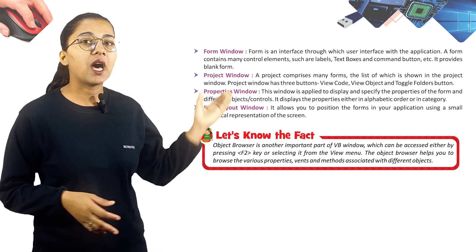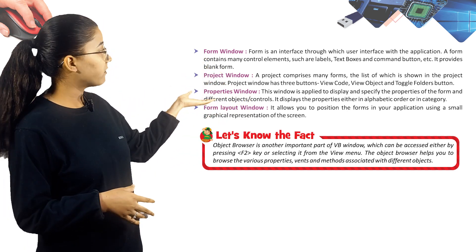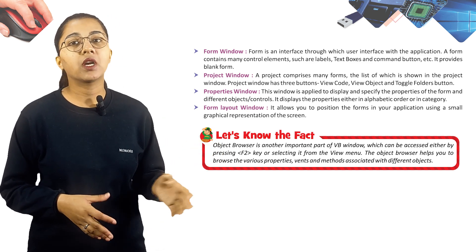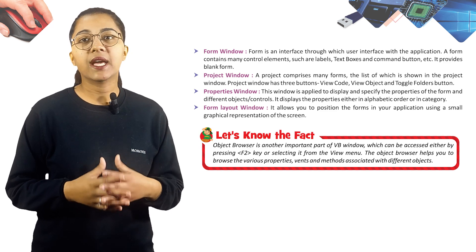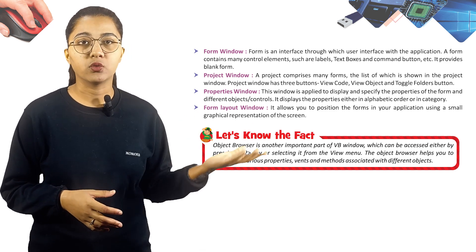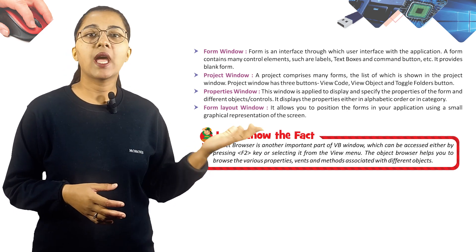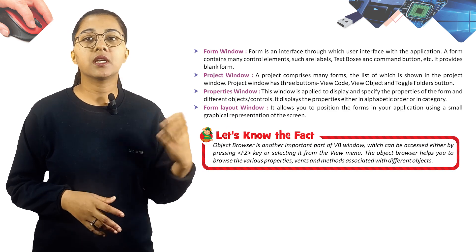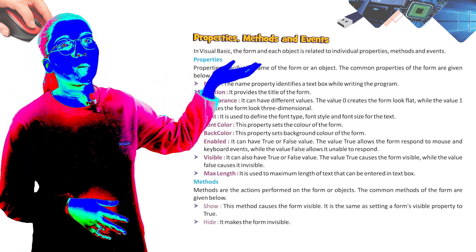Interesting fact: The Object Browser is another important part of the VB window, which can be accessed either by pressing the F2 key or by selecting it from the View menu. The Object Browser helps you browse the various properties, events, and methods associated with different objects.